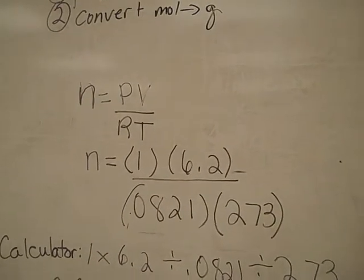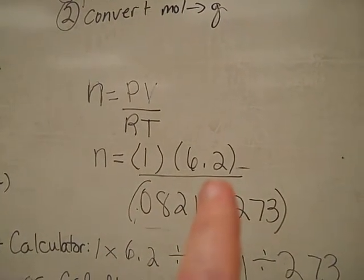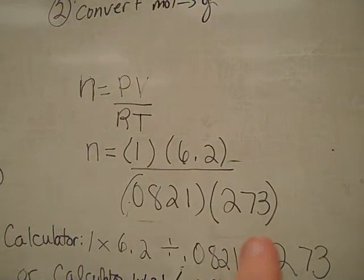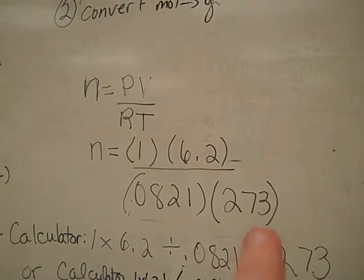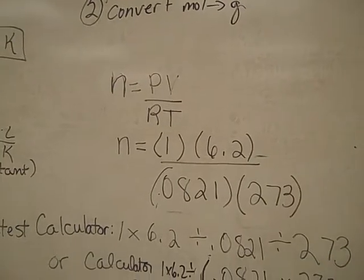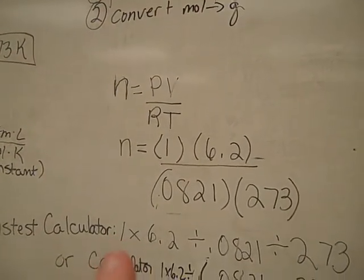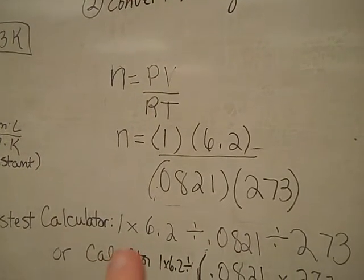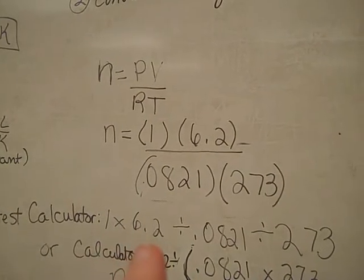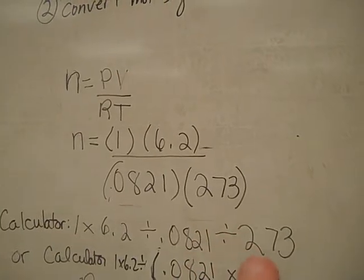So I've plugged in the numbers. Our pressure is 1, our volume is 6.2, our r constant is always 0.0821, and our temperature at standard temperature and pressure is 273. The quickest way to get through this problem in your calculator, of course you don't really need 1 times, but let's pretend it wasn't always 1. 1 times 6.2 divided by 0.0821 divided by 273.